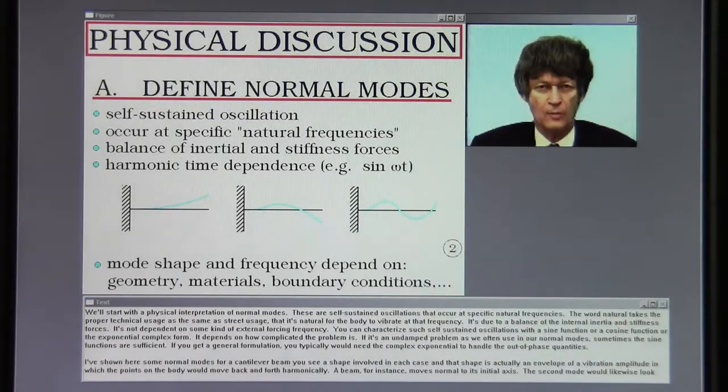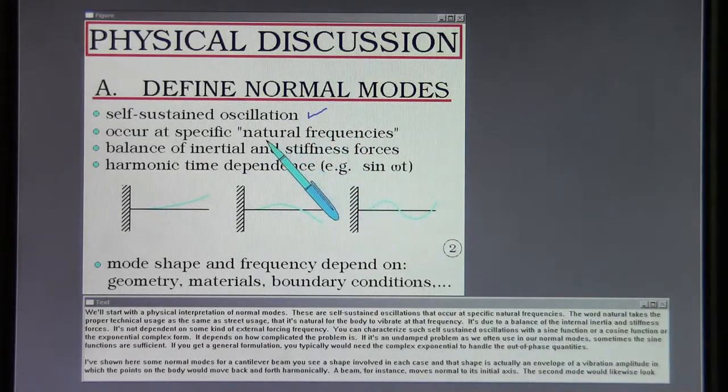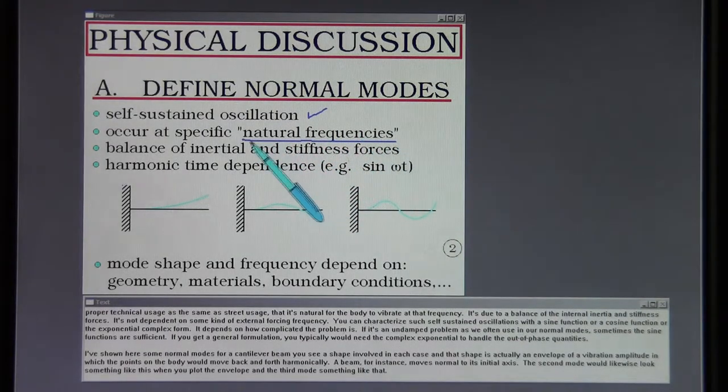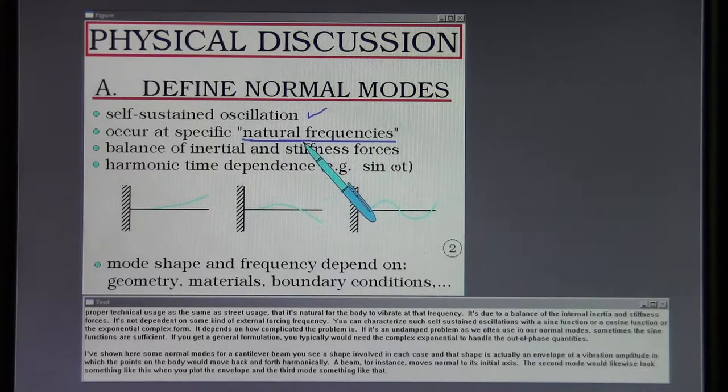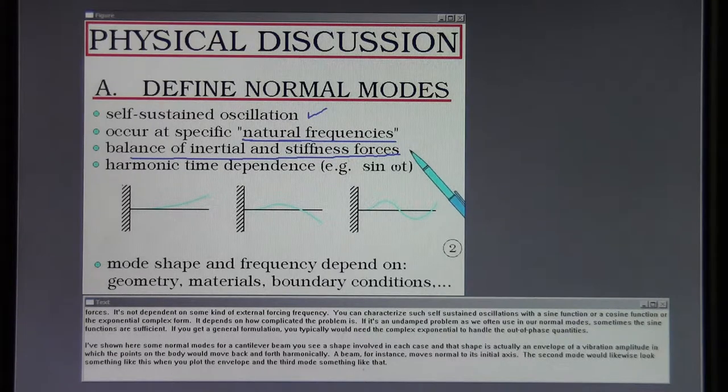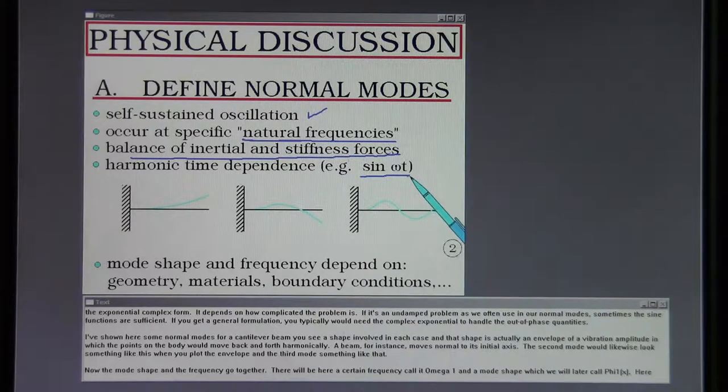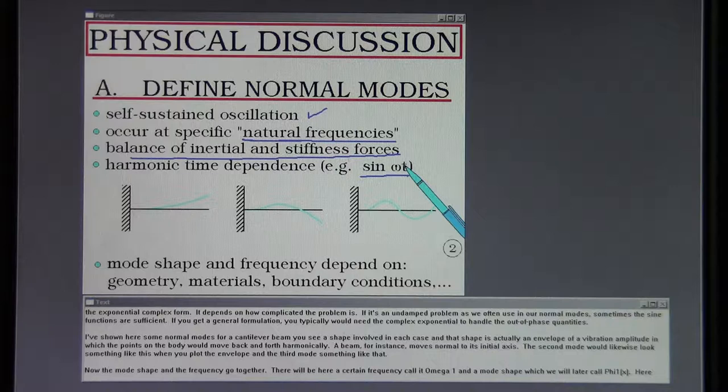We'll start with a physical interpretation of normal modes. These are self-sustained oscillations that occur at specific natural frequencies. The word natural takes the proper technical usage, meaning it's natural for the body to vibrate at that frequency due to a balance of the internal inertia and stiffness forces. It's not dependent on some kind of external forcing frequency. You can characterize such self-sustained oscillations with a sine function, a cosine function, or the exponential complex form. If it's an undamped problem, sometimes the sine functions are sufficient. For general formulations, you typically would need the complex exponential to handle the out-of-phase quantities.